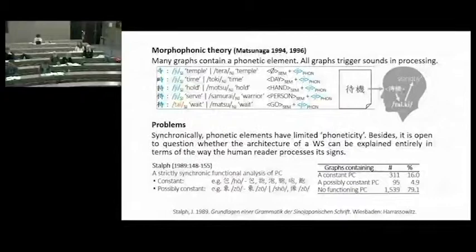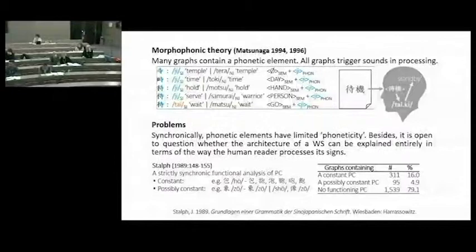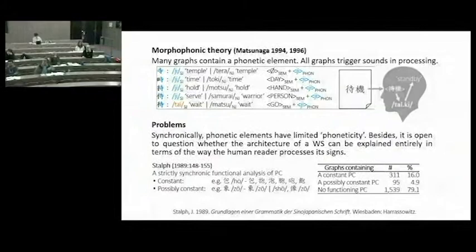Maybe this is influencing the way people cognitively understand kanji education. Morpheme is a very theoretical construct proposed in linguistics, and we don't do linguistics at primary schools. Pronunciation is taught, and it must have a massive impact on how we see kanji graphs.